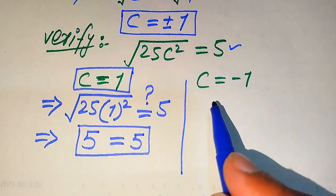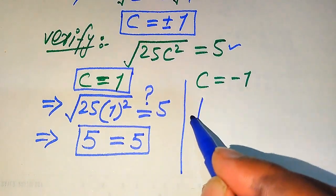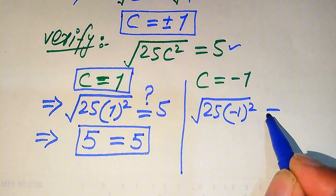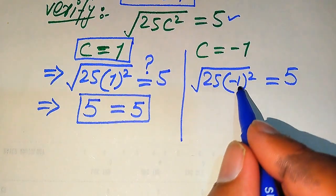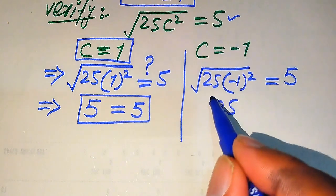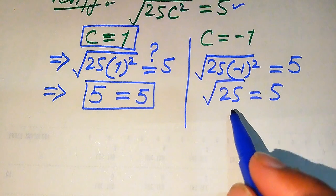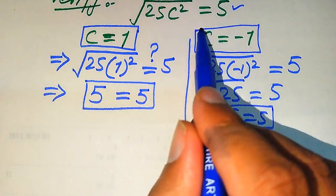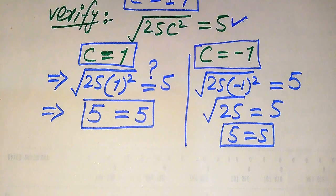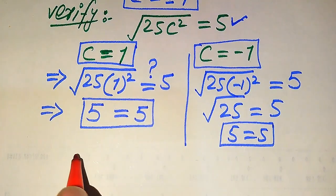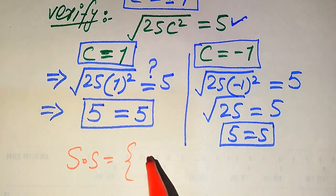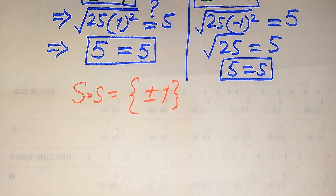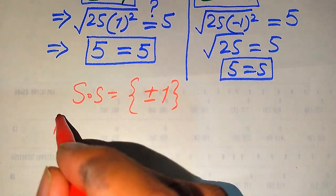Now we verify the second value, C equals minus 1. Substituting into the left hand side gives the square root of 25 times negative 1 squared. Since negative 1 squared equals positive 1, we get the square root of 25, which is 5, equals 5. This also satisfies the equation, so C equals minus 1 is also a valid solution. Therefore, the solution set is plus or minus 1, as both values satisfy the given equation.